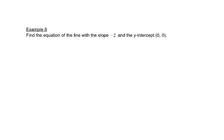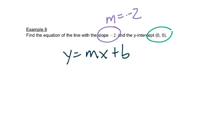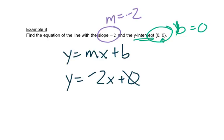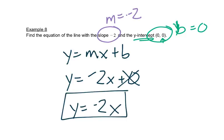So again we're using y equals mx plus b. Here's my slope, so m is negative 2. It says my y-intercept is the y part, so b is 0. So I'd have y equals negative 2x plus 0. We don't normally write the plus 0 on the end. We could just write y equals negative 2x.